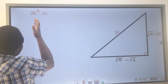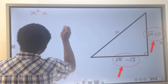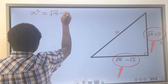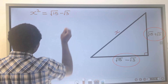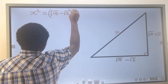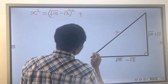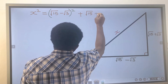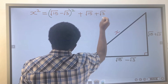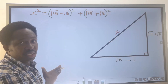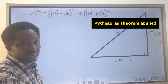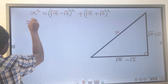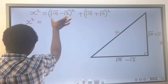Next, we're going to square each of the other sides. We have the square root of 15 minus the square root of 3, all squared, plus the square root of 15 plus the square root of 3, all squared. This is Pythagoras' theorem.